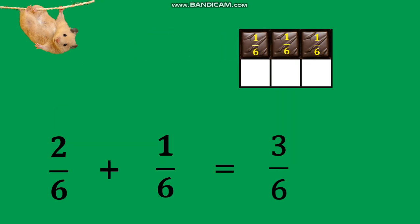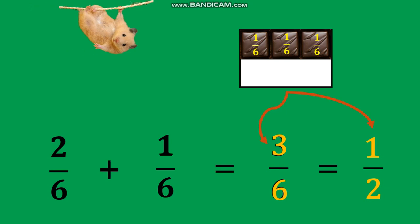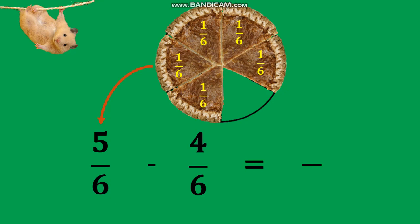Making it 3 sixths. Then we will change the answer to the lowest term by removing slices that divide the chocolate, and it will become 1 half.